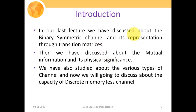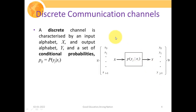We also studied various types of channels such as the noiseless channel, the distortionless channel, etc. Now we're going to discuss the capacity of the discrete memoryless channel. As we discussed, in order to connect your transmitter and receiver, we have some physical medium — the channel — and that communication channel is characterized with the help of transition matrices.